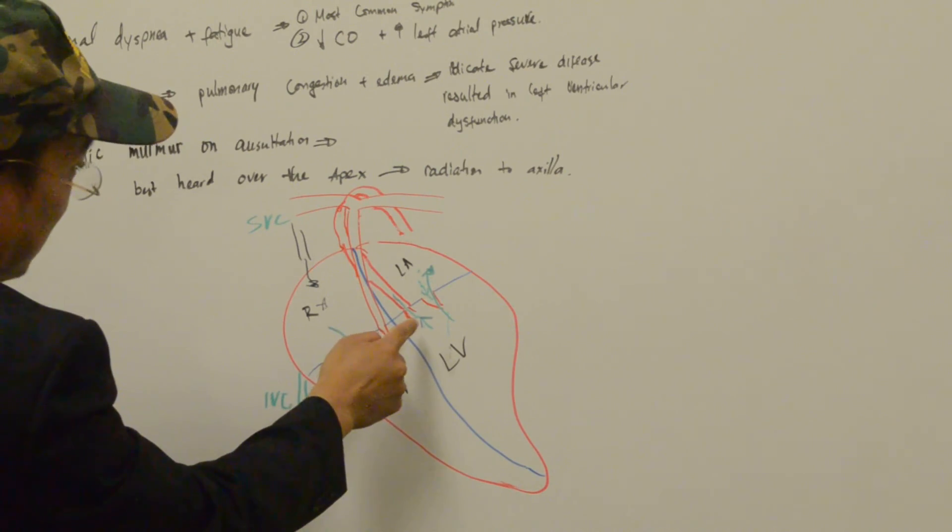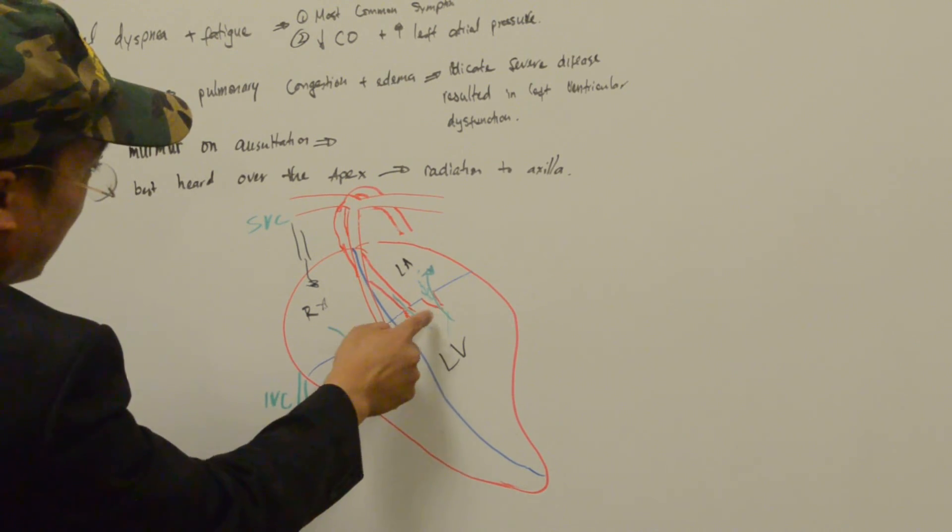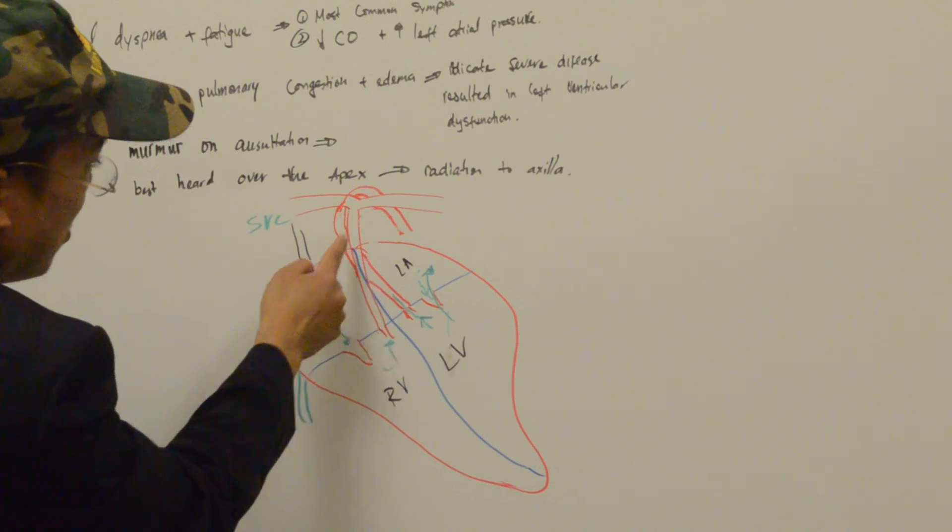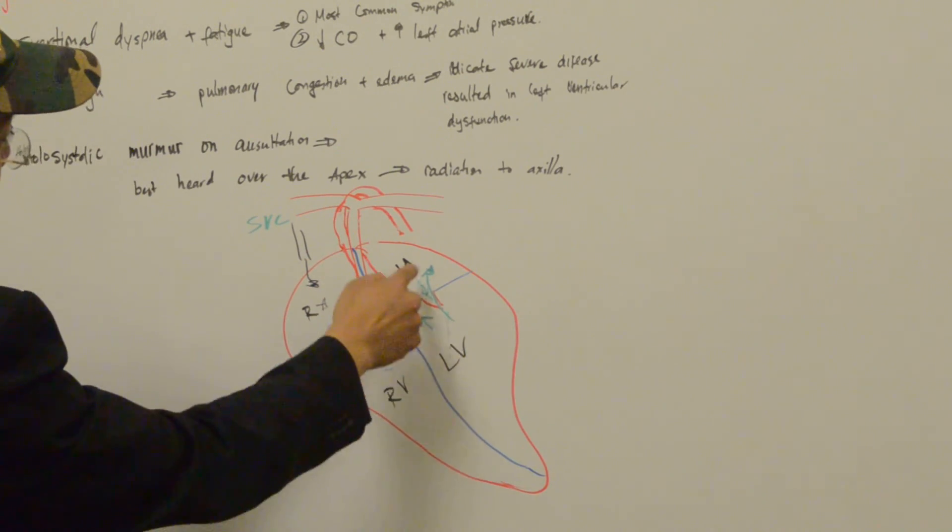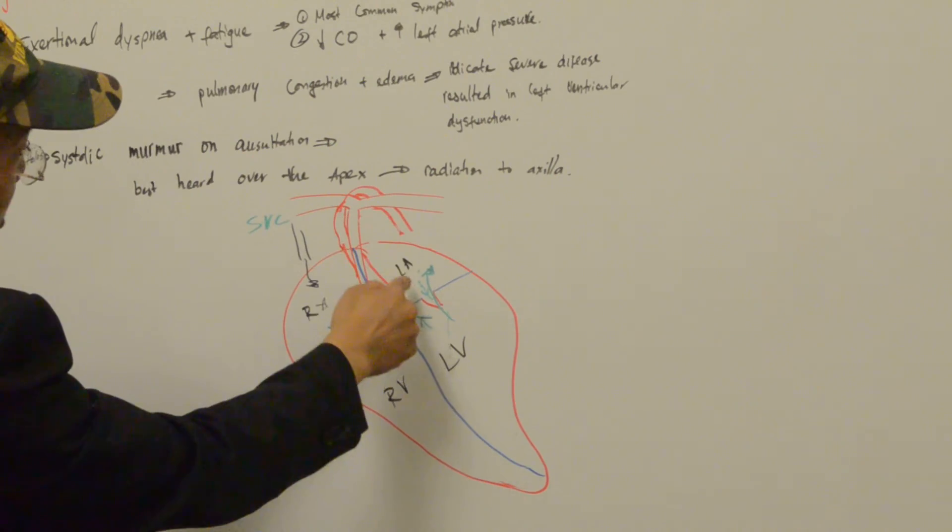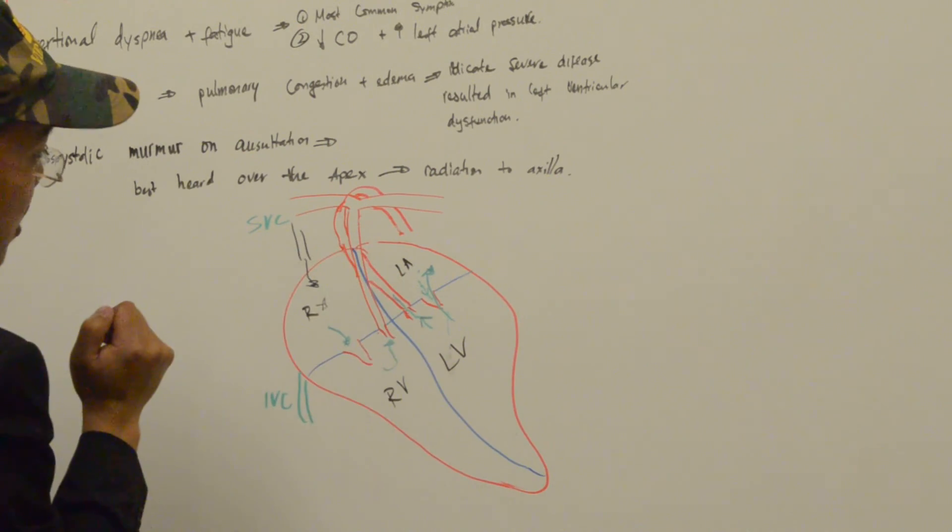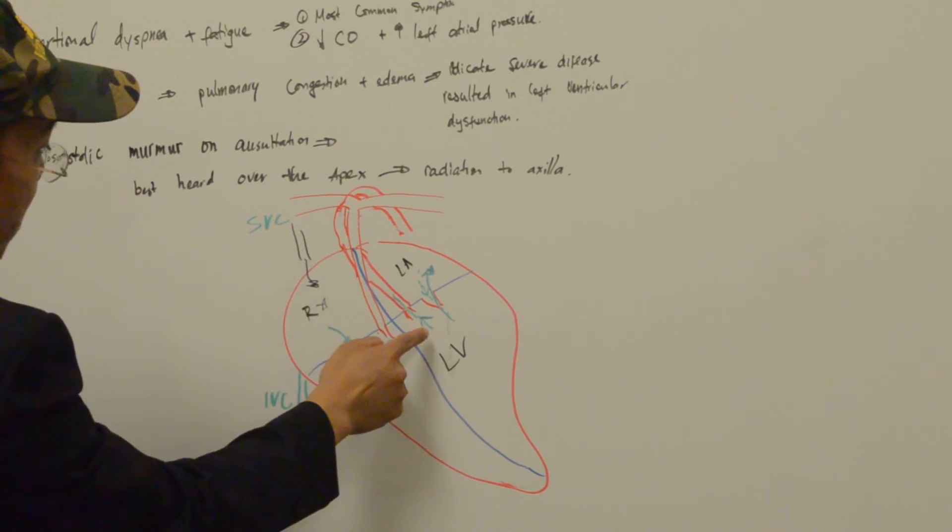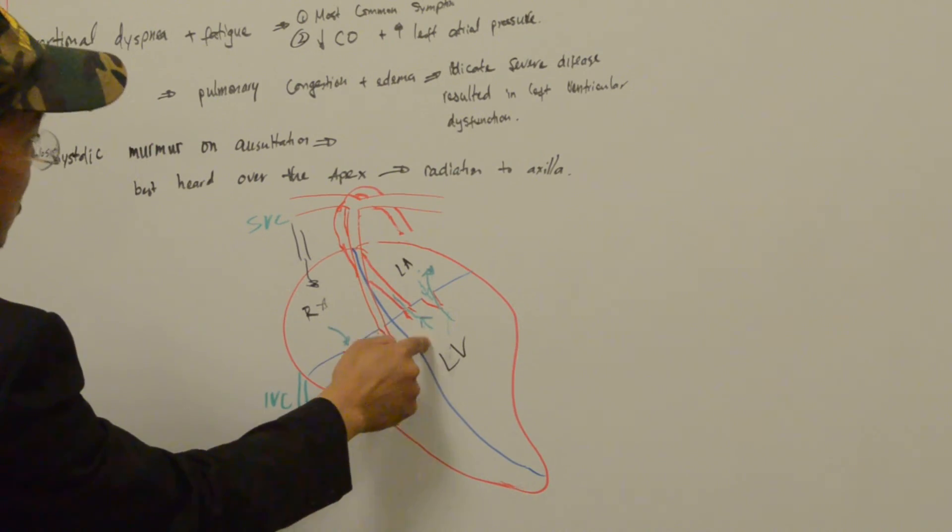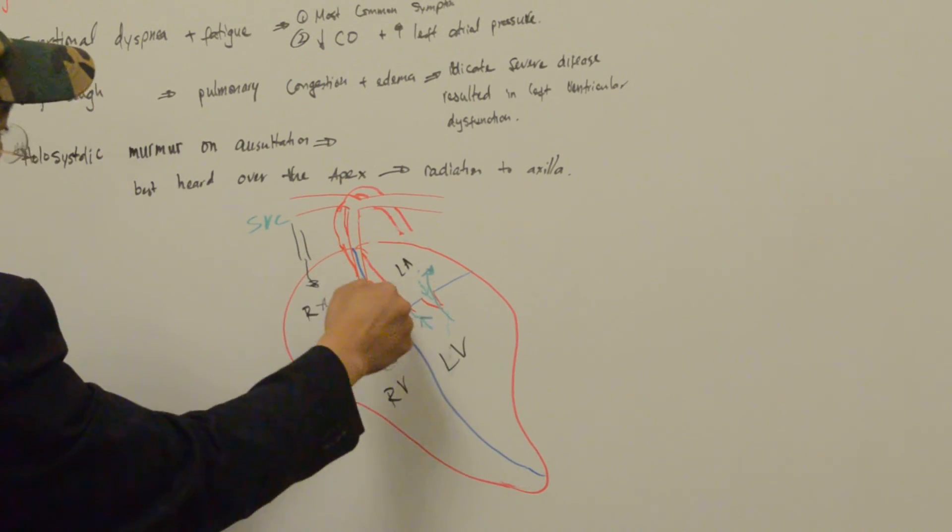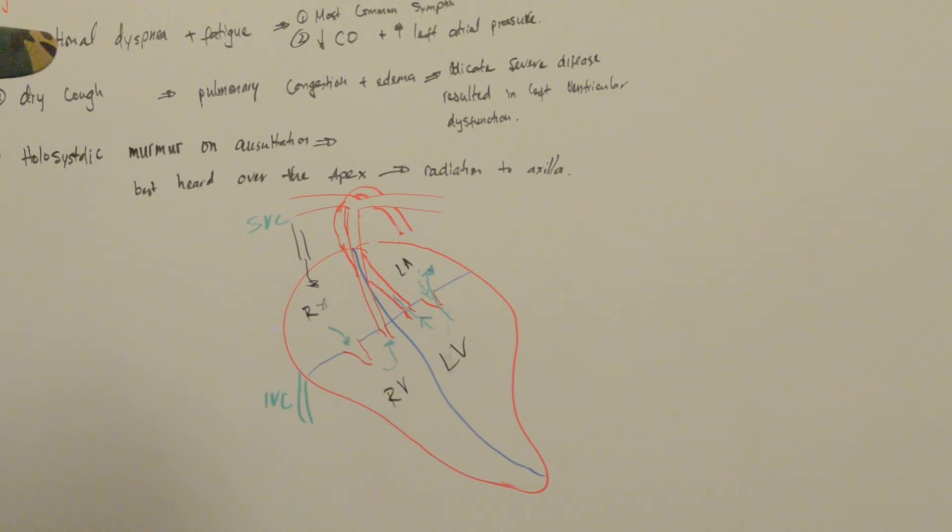We have decreased cardiac output because instead of going forward, blood backflows through the mitral valve into the left atrium. There is less oxygenated blood going into the aorta to supply the body, tissues, and organs.